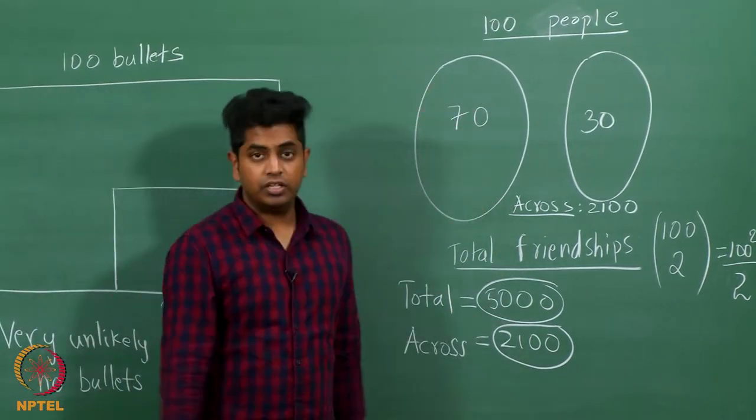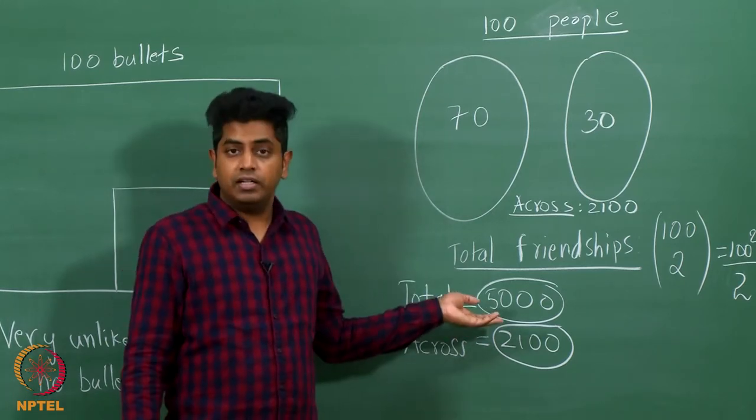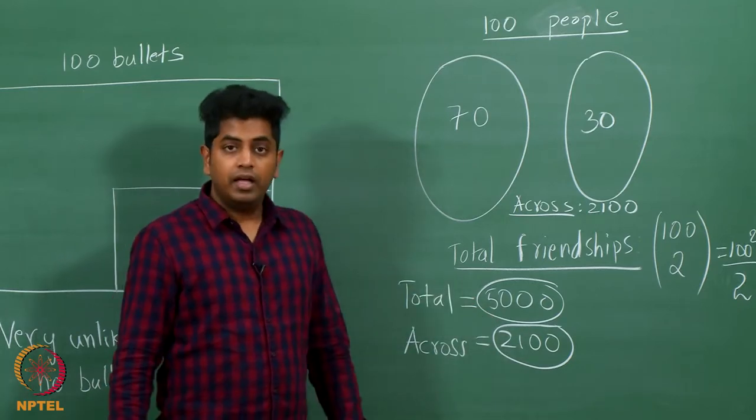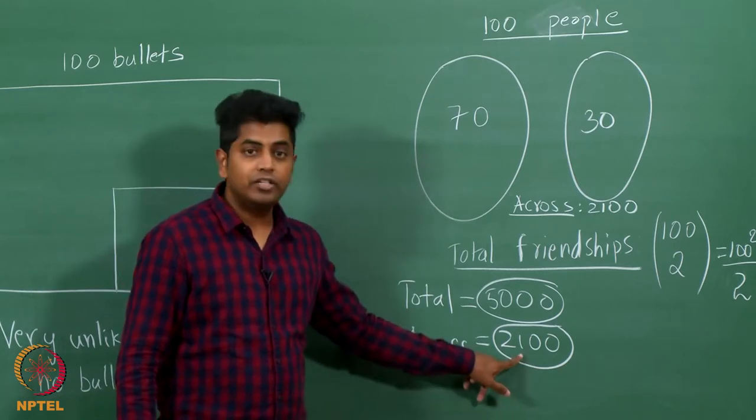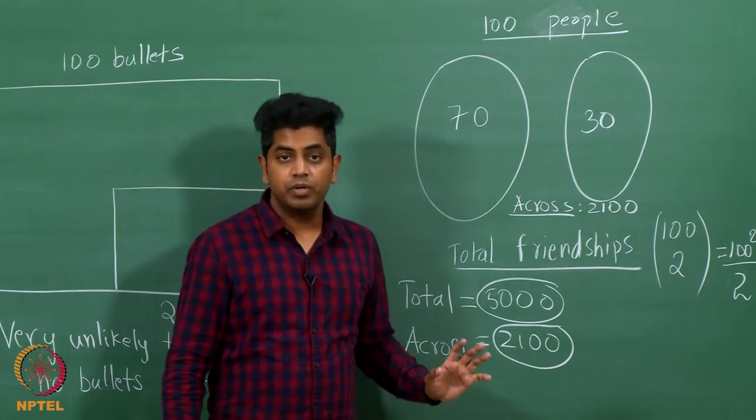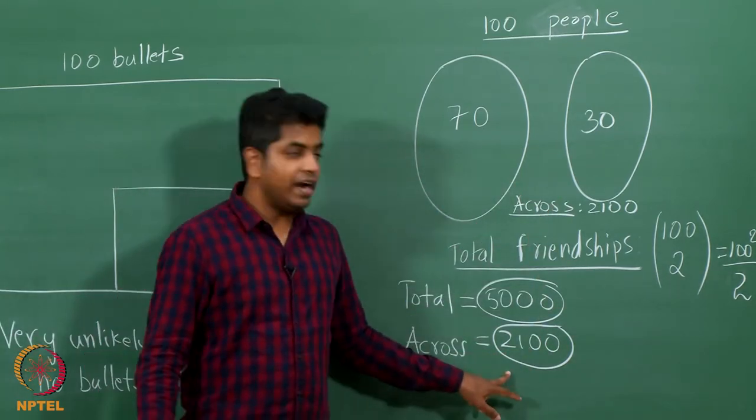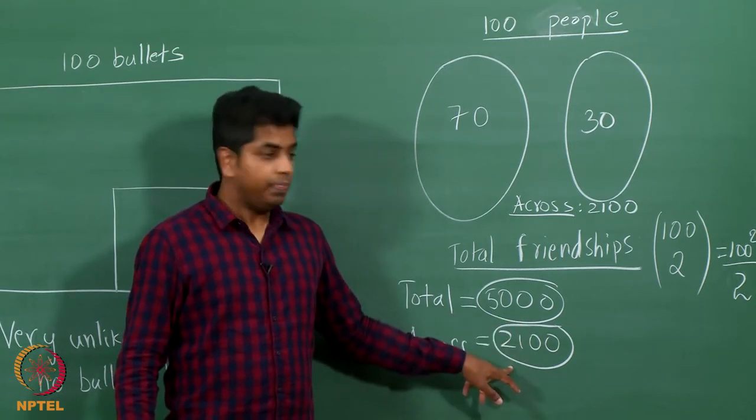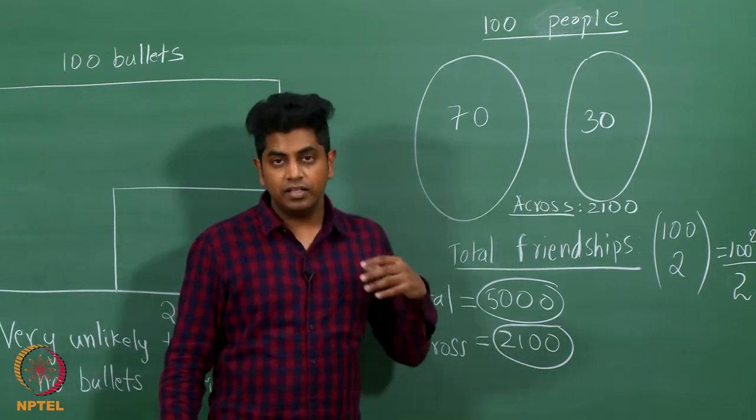Here is a situation where there was a possibility for people to make 5000-something friendships, and every single friendship that they chose did not fall into this. Did not fall into the across friendship. There were so many possible ways in which they could have had an across friendship. They did not. All of them fell within only. This is very unlikely.